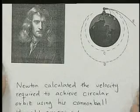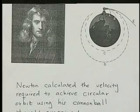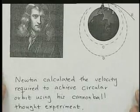Isaac Newton calculated the velocity required to achieve circular orbit using his cannonball thought experiment.